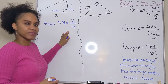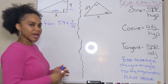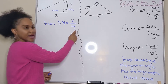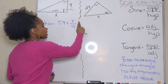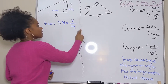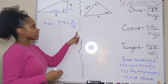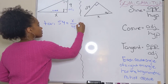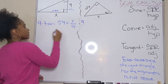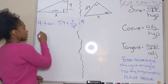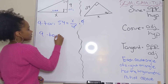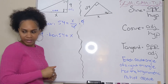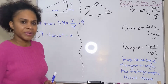Now that the trig function is set up, we solve for x. We can treat it like a one-step equation. Since x is being divided by 9, we multiply both sides by 9. The 9 cancels on the right side, leaving us with 9 times tangent of 54 equals x.